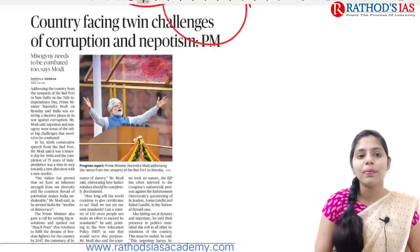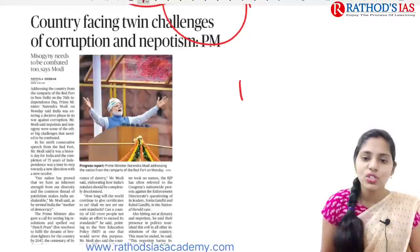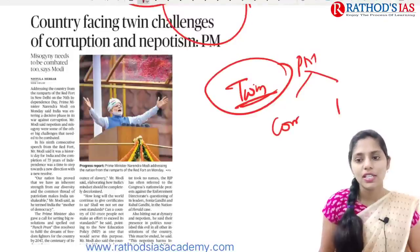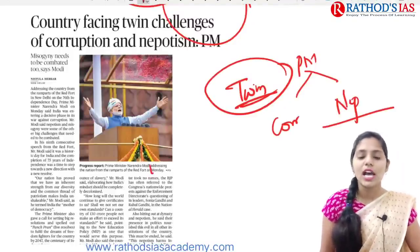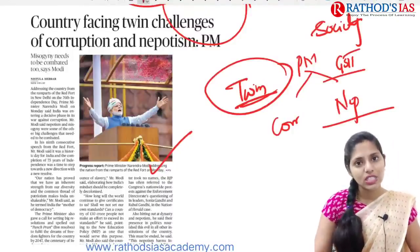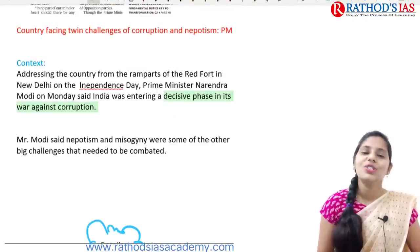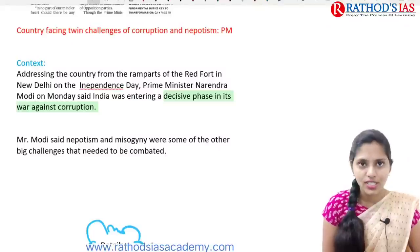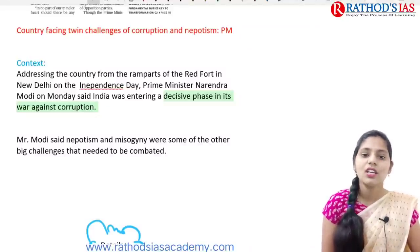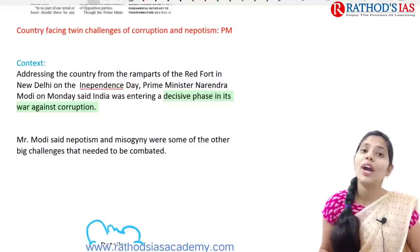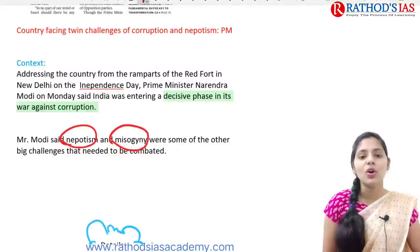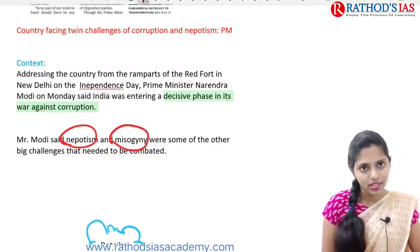The next topic is regarding corruption and nepotism. Our country is facing twin challenges — first, corruption, and second, nepotism or favoritism. This article is important from a society point of view under GS Paper 2. Our prime minister addressed the country on Independence Day and said we are entering into a decisive phase in the war against corruption. He also said nepotism and misogyny are some of the other big challenges that need to be addressed in our country.